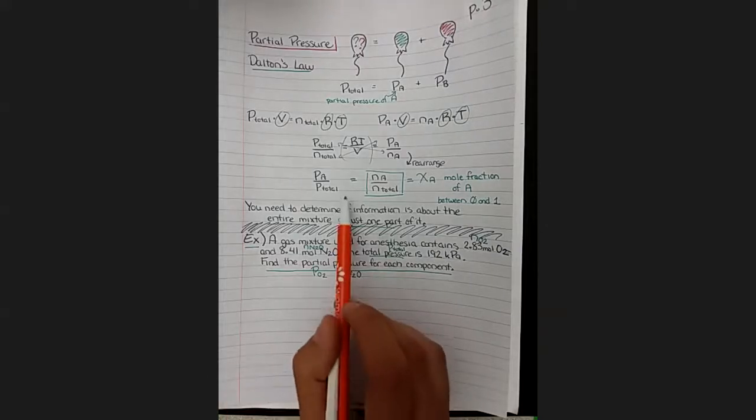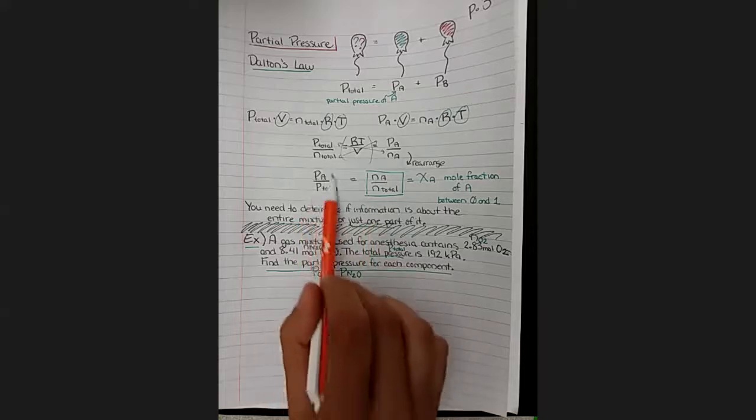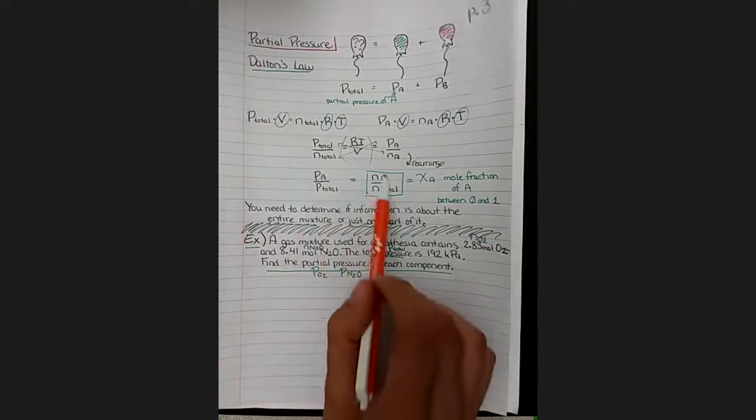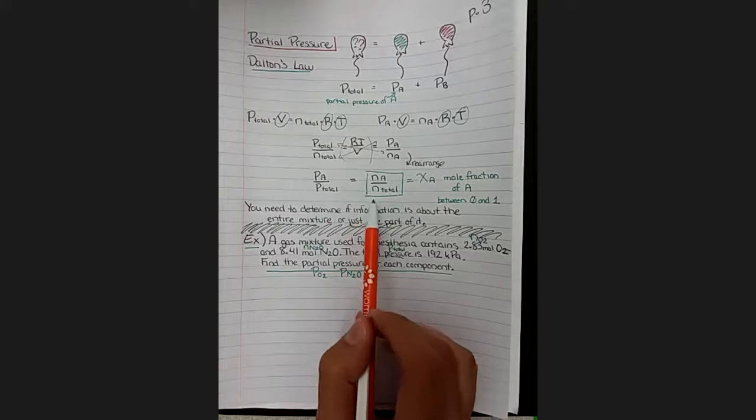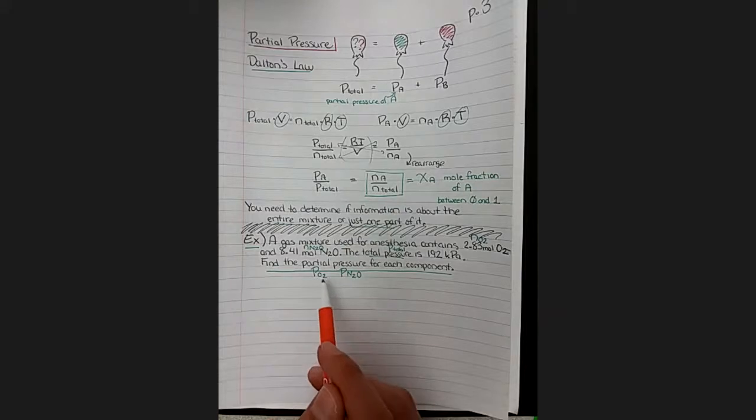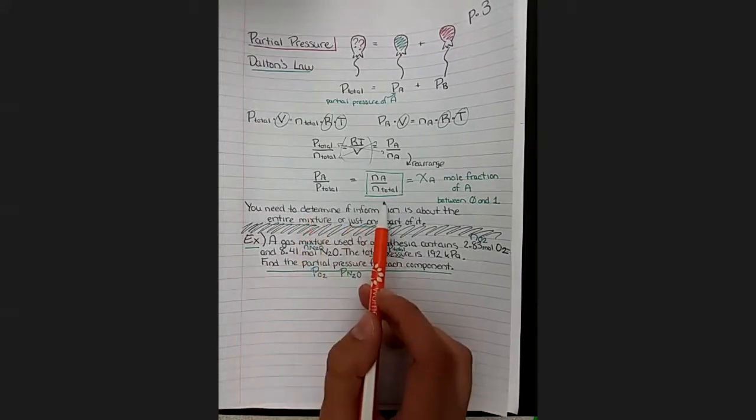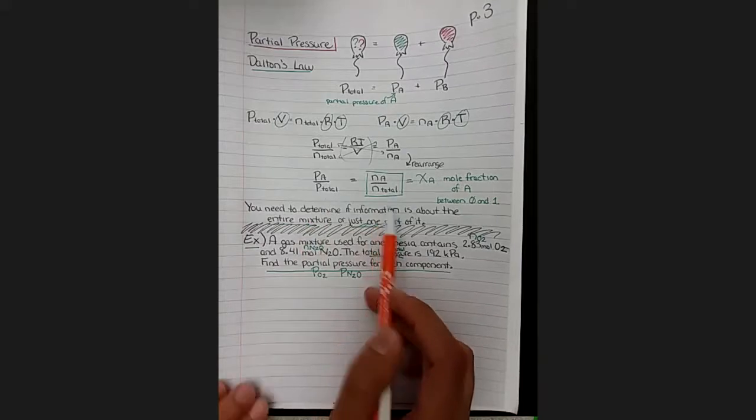What we need to do to make use of Dalton's law that we found up here is we need to find the pressure ratios and the mole ratios. Based on the fact that the problem asked us to find the partial pressures, I'm guessing we don't have both of these numbers yet. So we'll start with the other one. We'll start with the mole fraction.